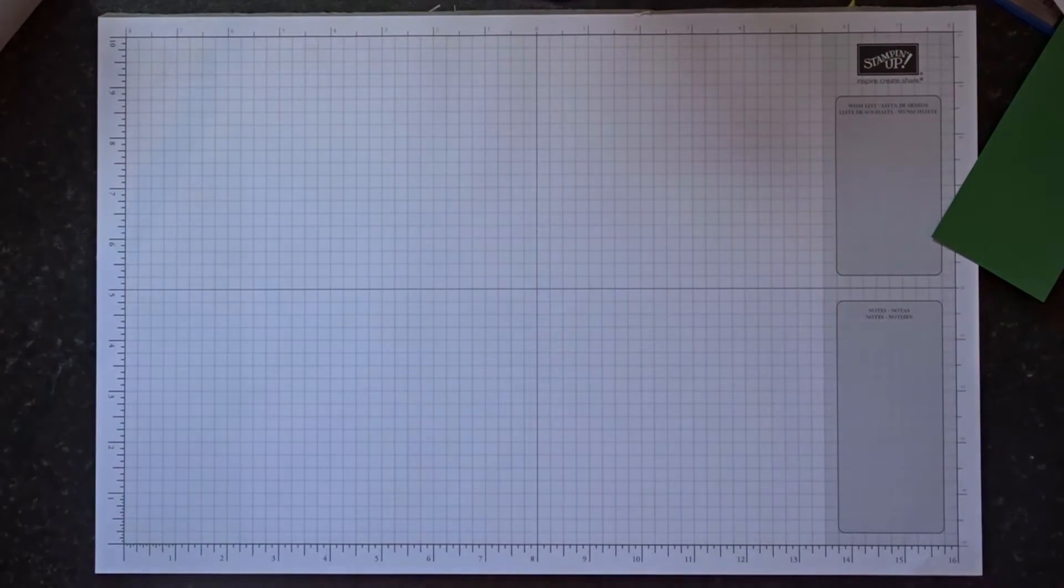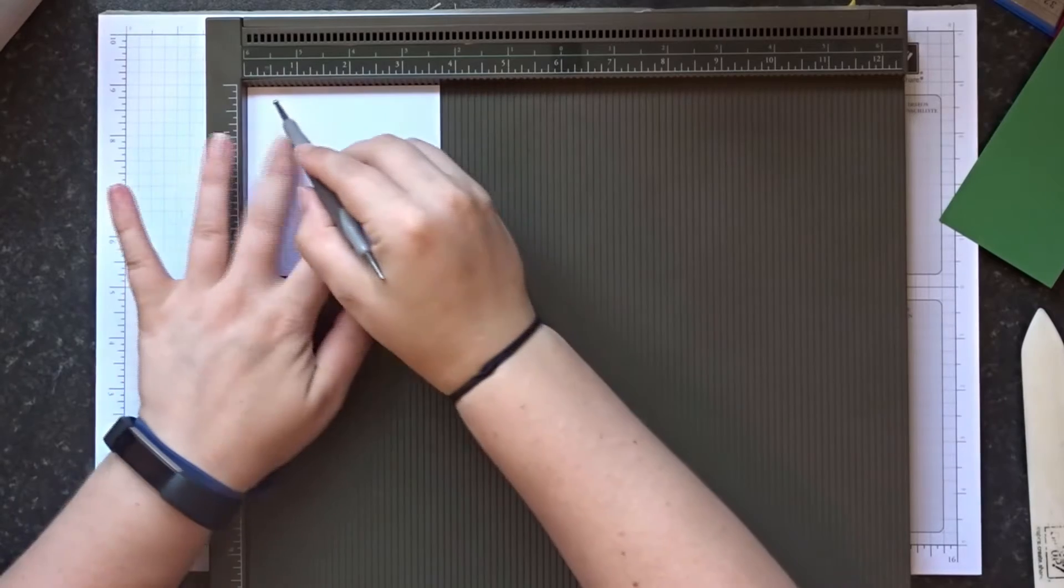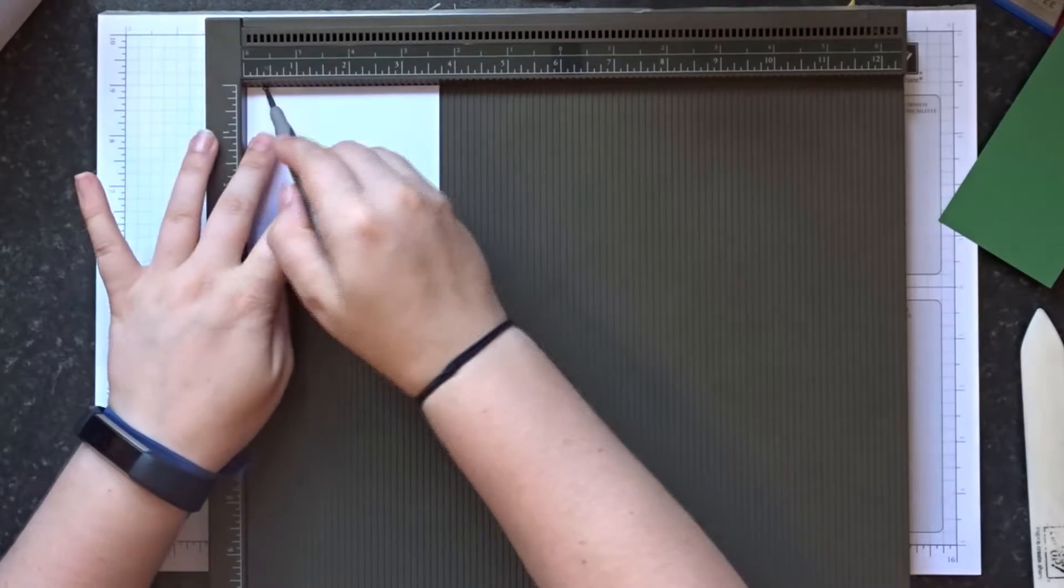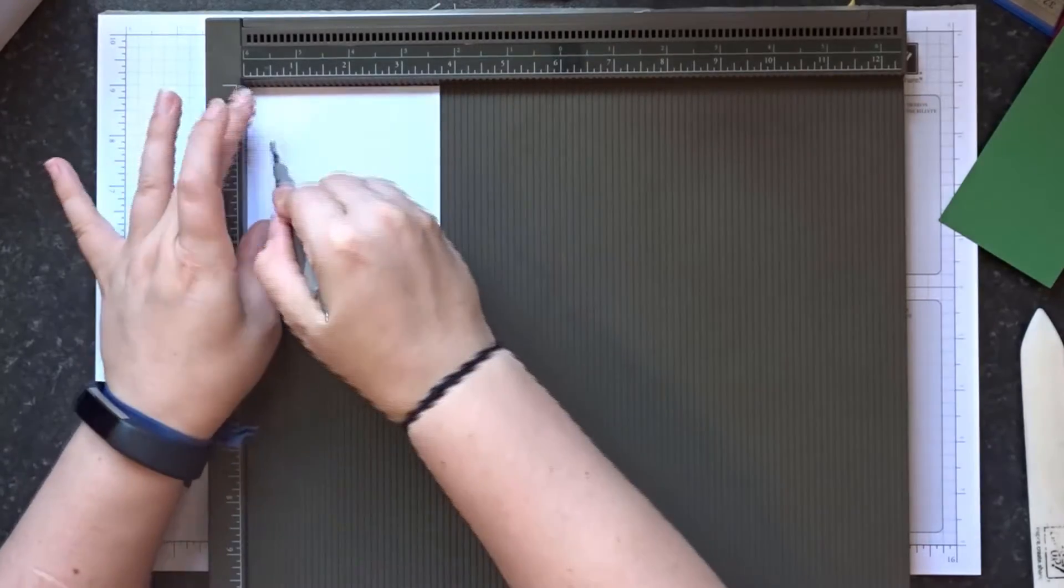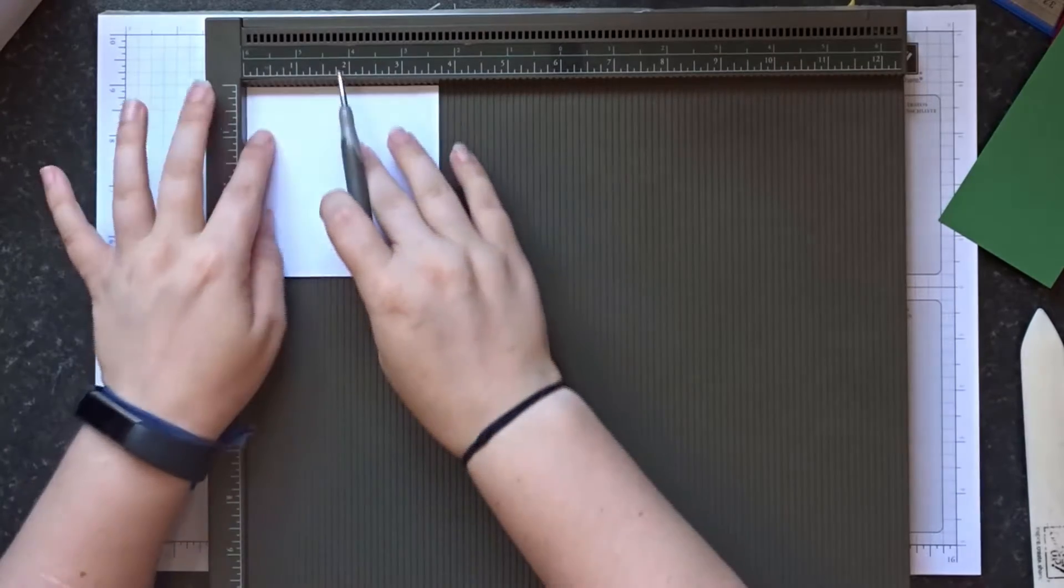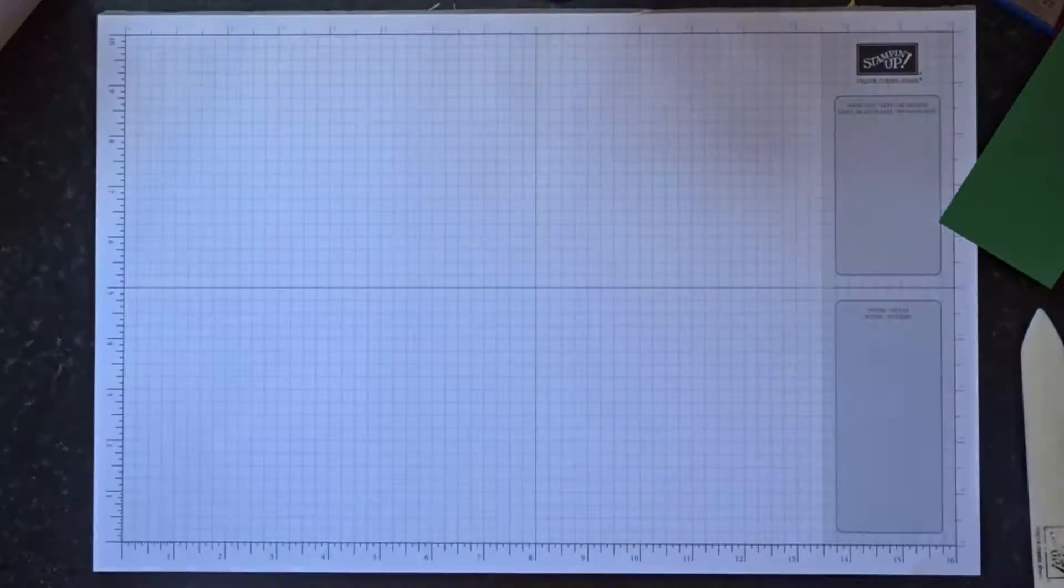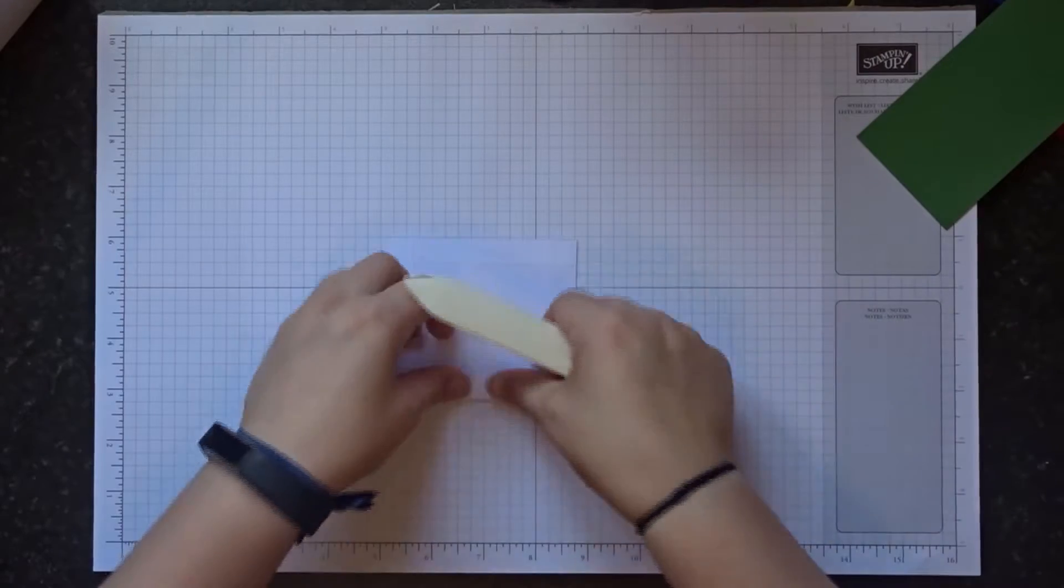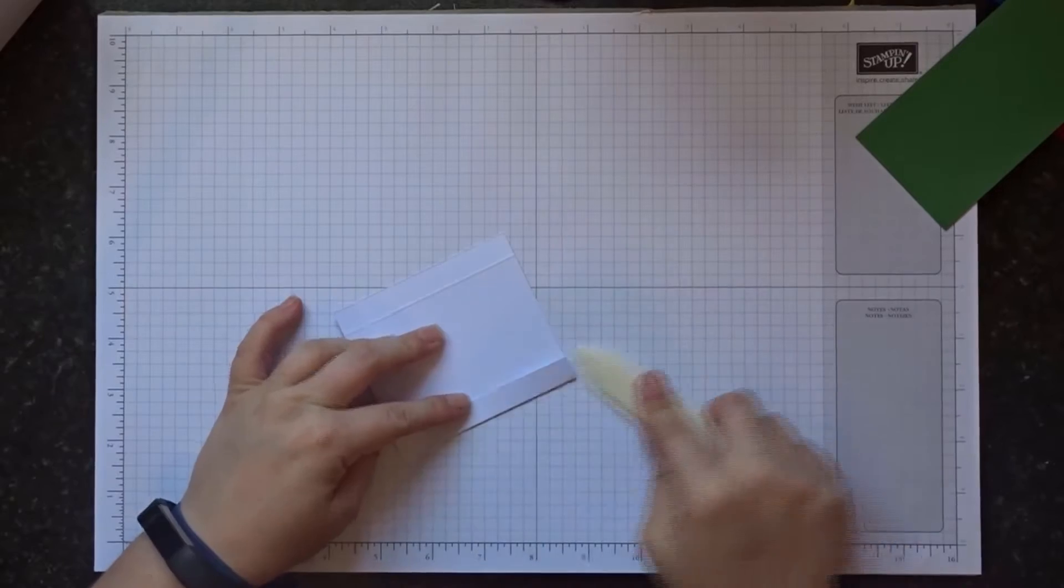And then you do need your scoreboard again. That little scrap bit that is three and eleven sixteenths by three and eleven sixteenths, you need to score at half an inch on all sides. Just keep rotating and score at half an inch. This is just going to create our base. We're going to get a reinforced base as the item we're putting in is quite heavy. So again, fold and burnish this all around on each side.